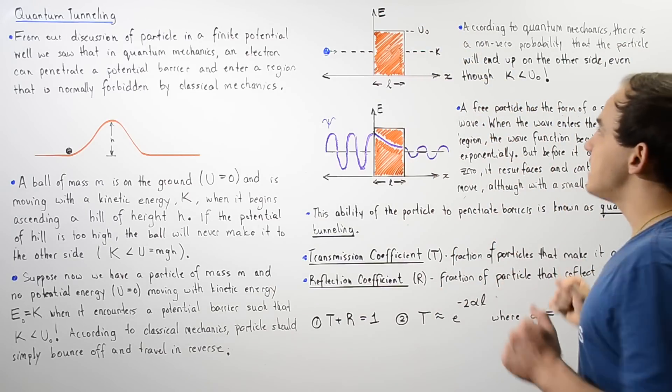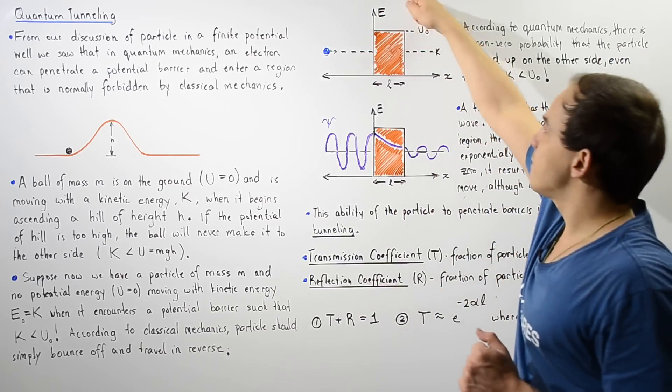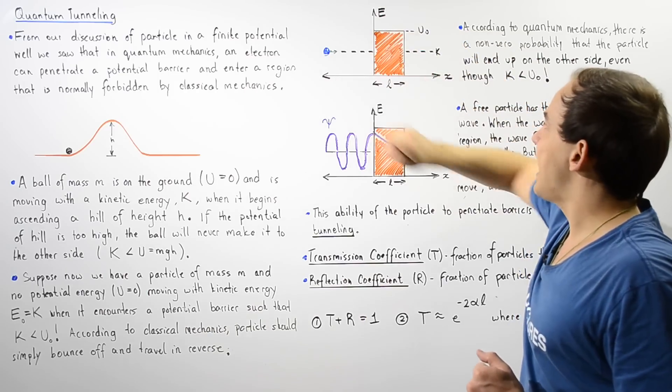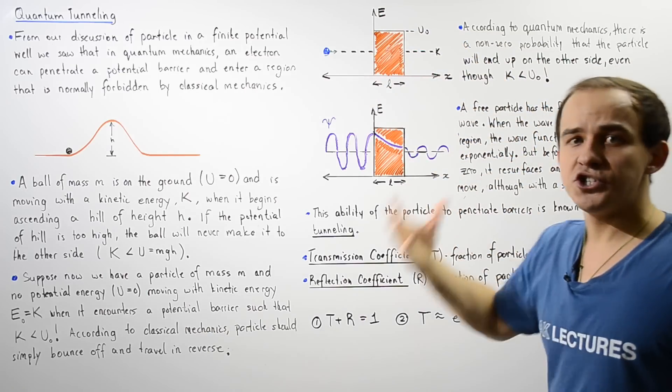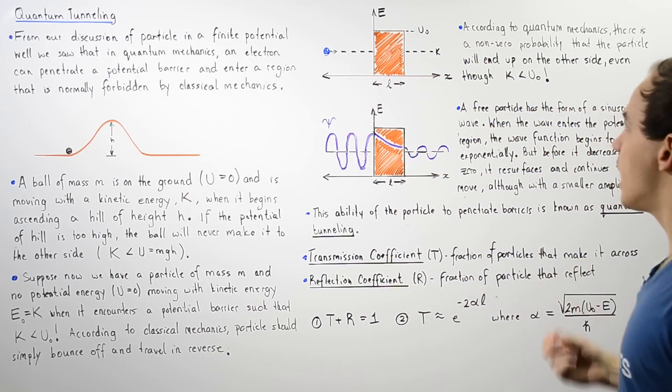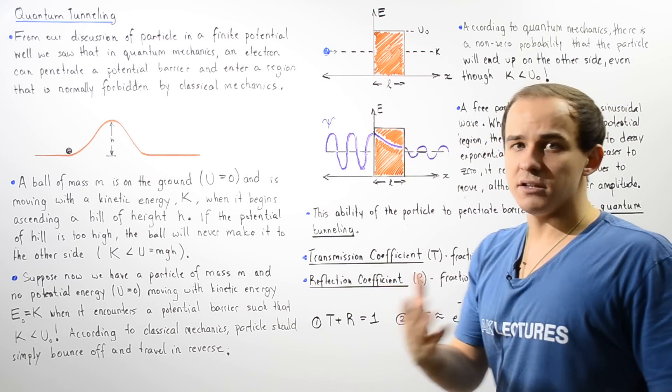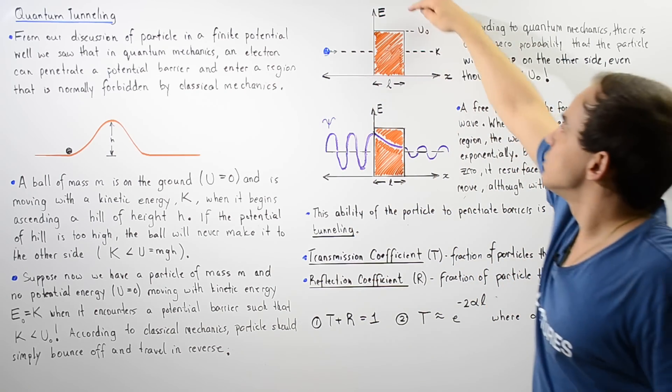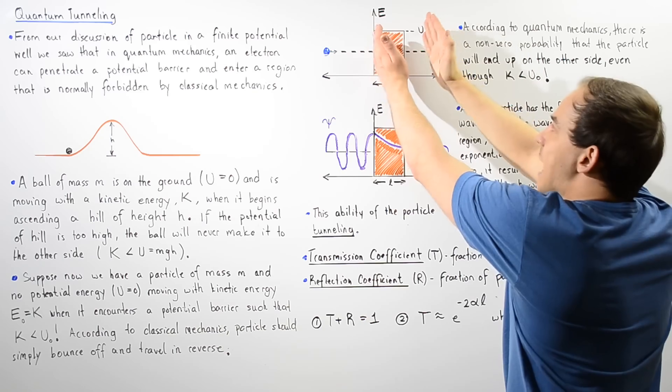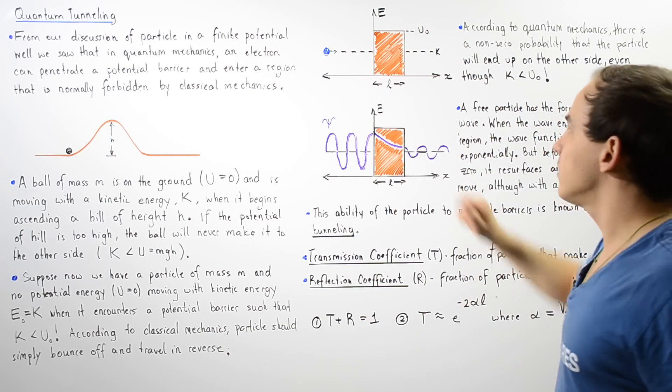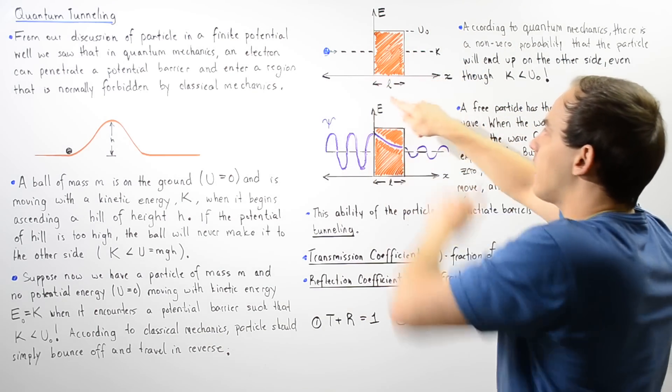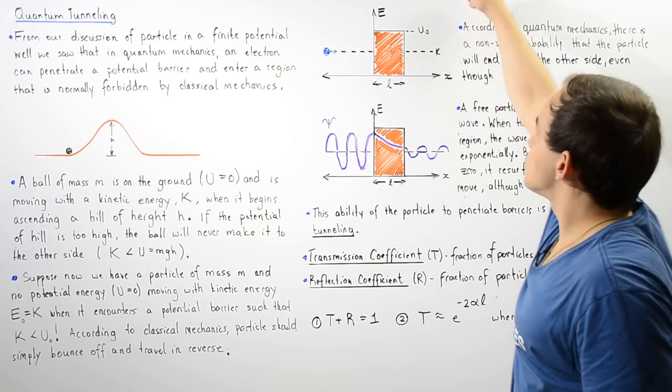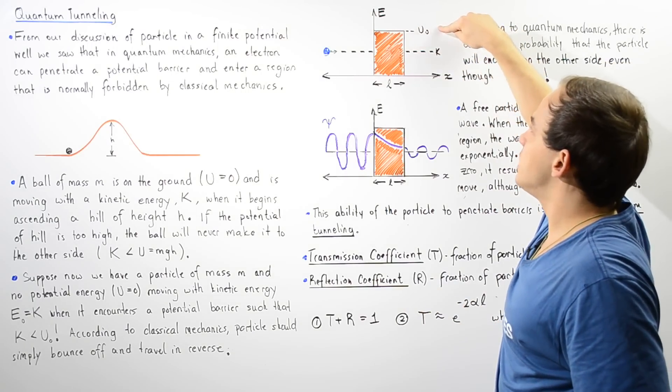So let's examine the following diagram. We have the y-axis, which is the energy, the x-axis, which is the position of that object. So we have the particle, the electron is traveling along the horizontal axis. So notice this is our barrier, our potential barrier, and the width of this barrier is given by the distance L.